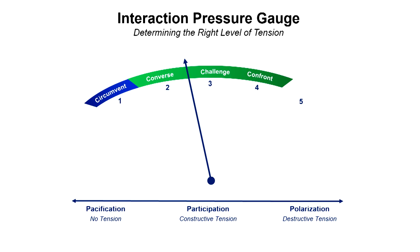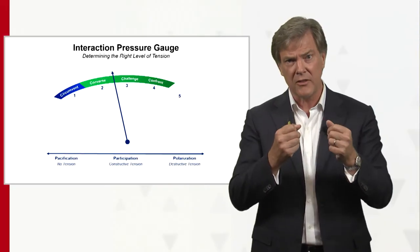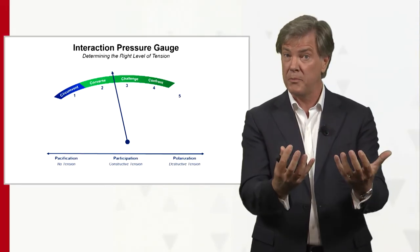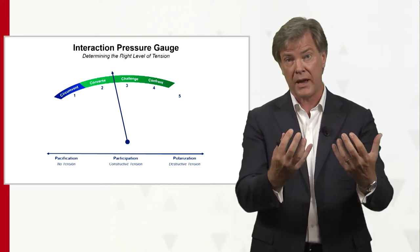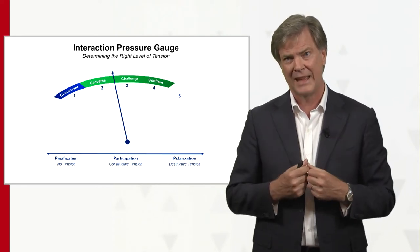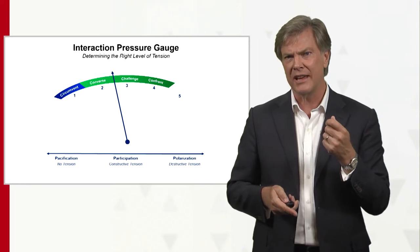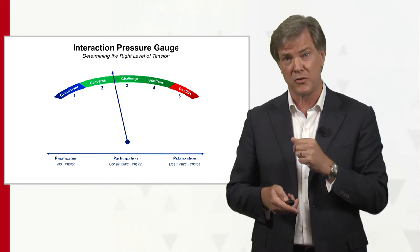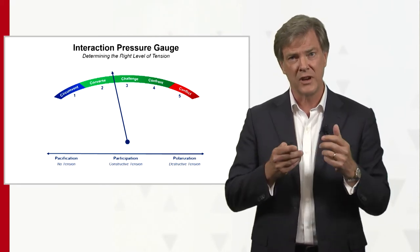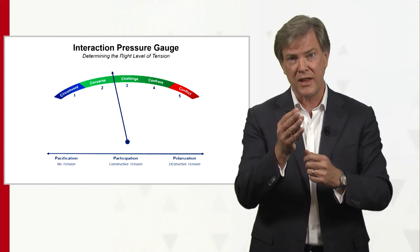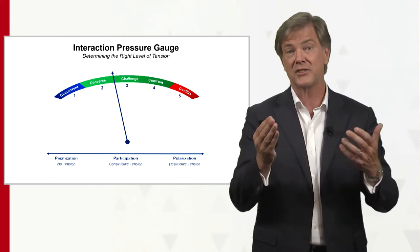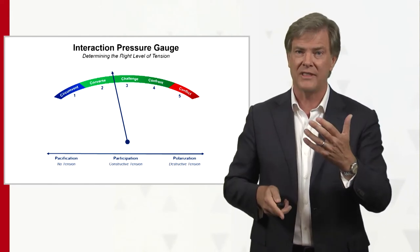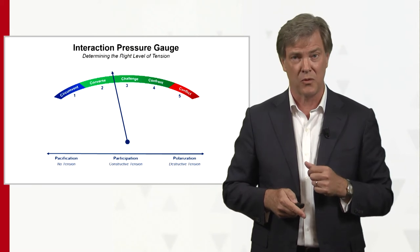We can go even a step further: we confront. 'I don't agree. That's not a good idea. I don't want to see that anymore.' So I'm really confronting the other, putting a lot of pressure, hopefully provoking them to come into a discussion with me. Some people might feel: if I'm confronting, aren't I getting into a conflict? Well, that's when we've gone too far. Conflict is where we've put so much pressure that we've gone to the edge of actually getting into a fight — and that's very often not beneficial. We've polarized too much.